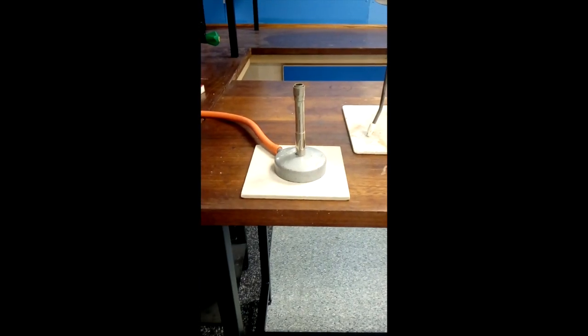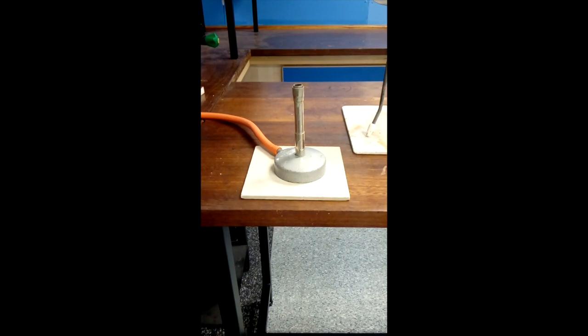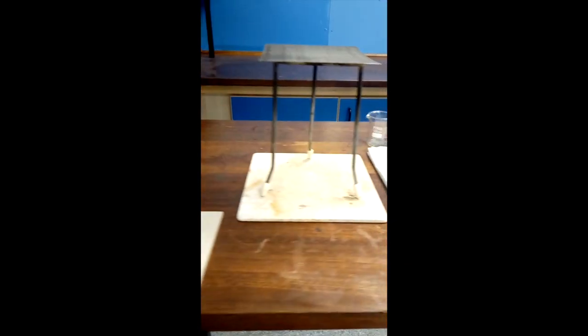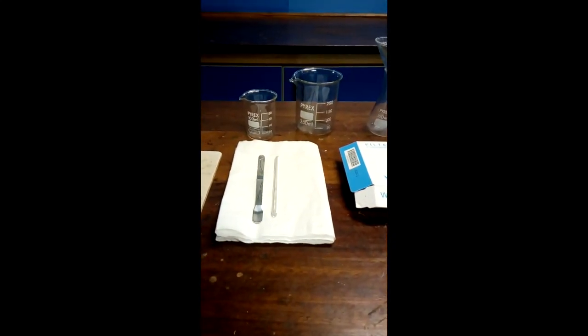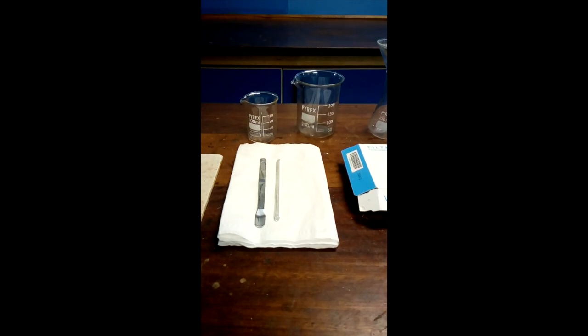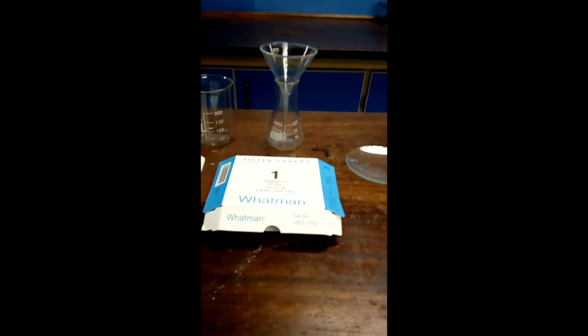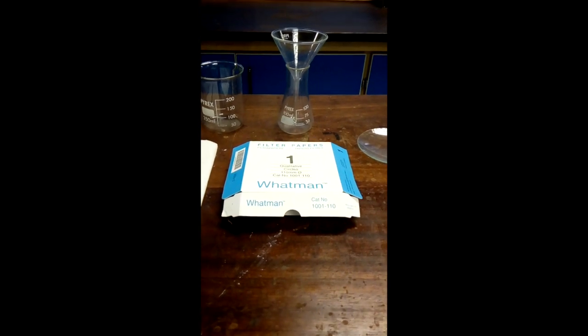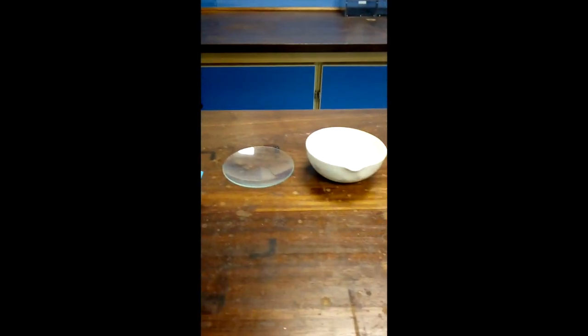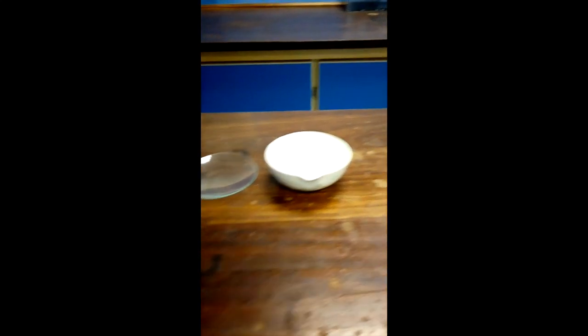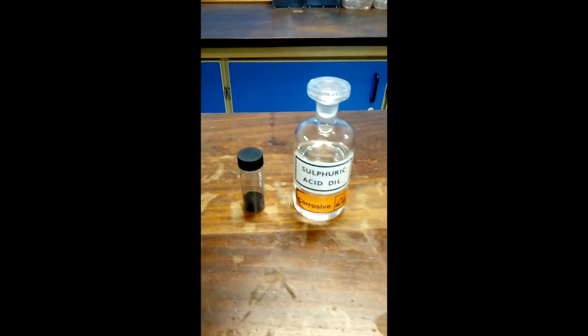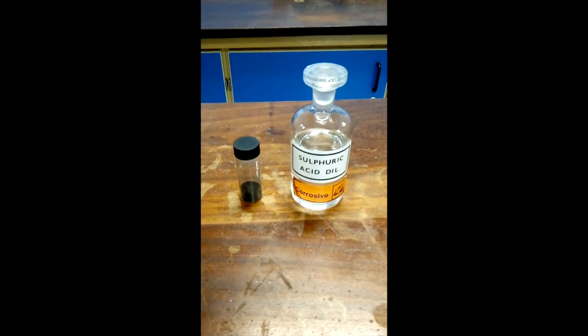You are provided with the following: Bunsen burner, heatproof mat, tripod and gauze, spatula, glass rod, 100 and 250 cm cubed beakers, filter funnel and conical flask, filter paper, watch glass and evaporating basin, and your initial reagents of copper oxide powder and sulphuric acid.